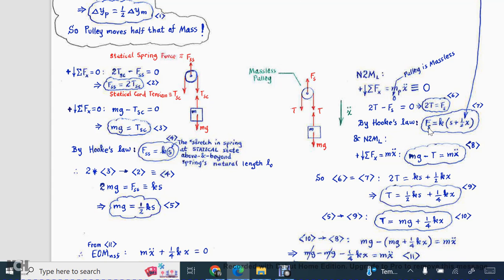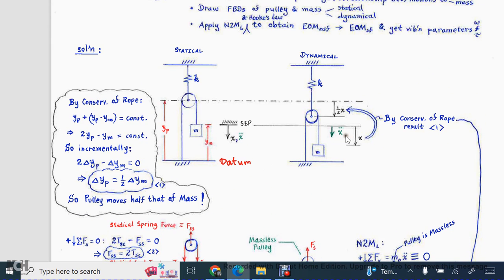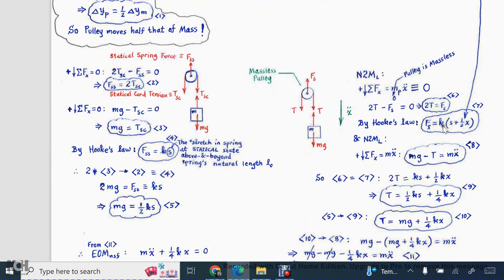Then once again by Hooke's law, what is the force of the spring? Again, it's going to be k times the amount it's stretched. But now, if we have said that the mass has gone down by an x amount, given our relationship between the pulley and the mass, remember that the pulley is going half that of the mass. So if the mass went down by x, the pulley went down by half as much. So that's one half of x added to the s that it started with. So we're down at a grand total of s plus one half of x, and all of that is multiplied by k to give us back our spring force.